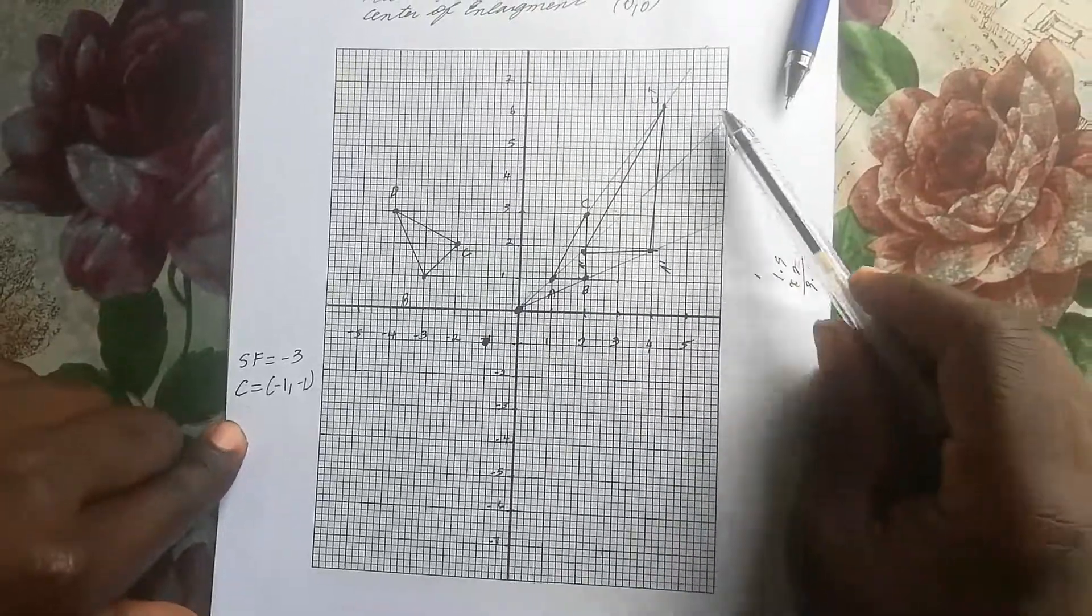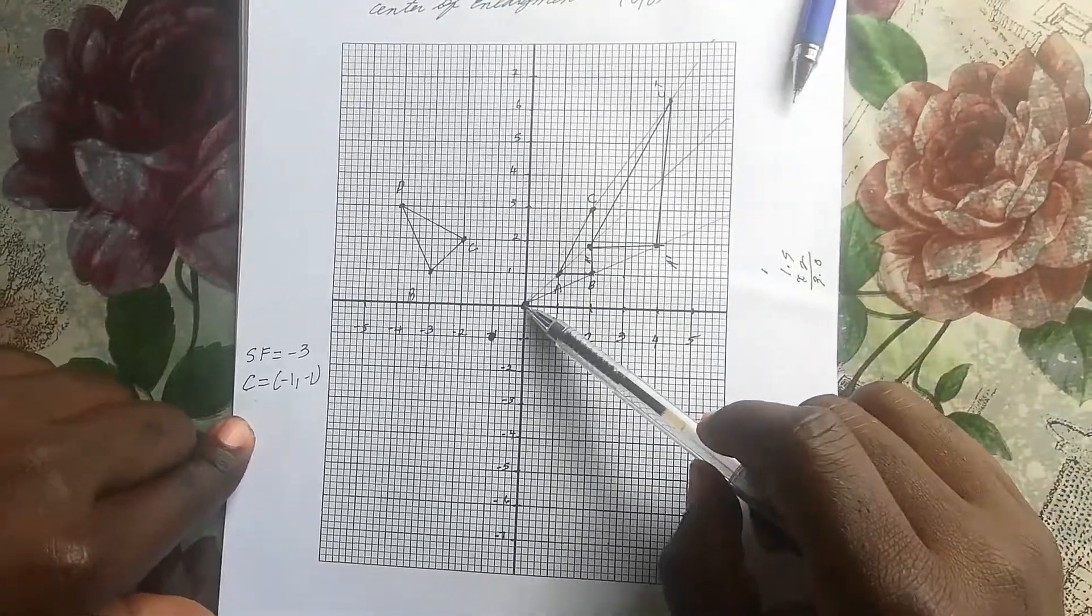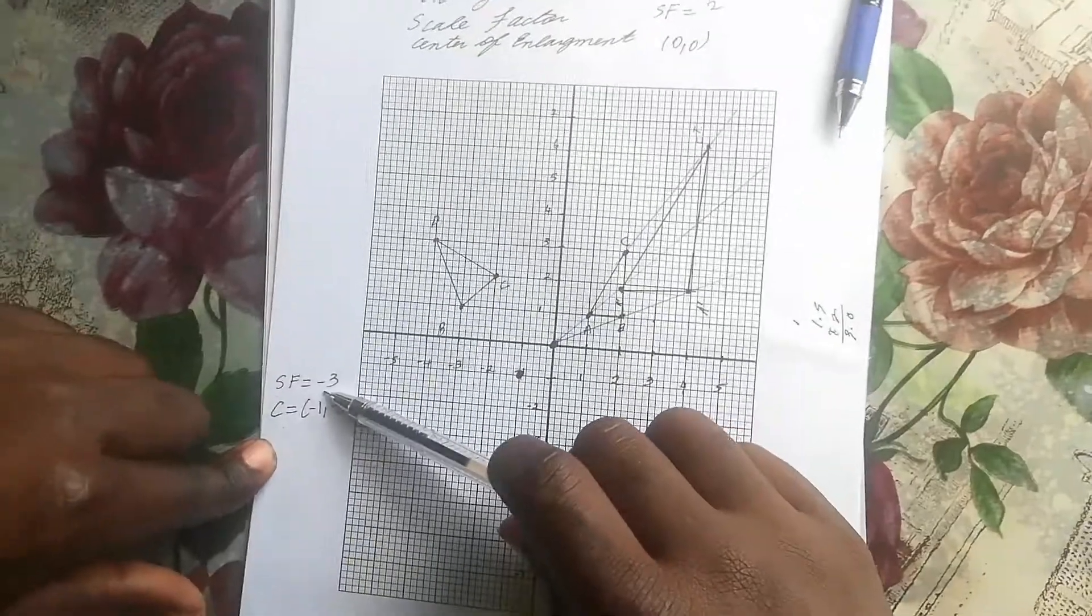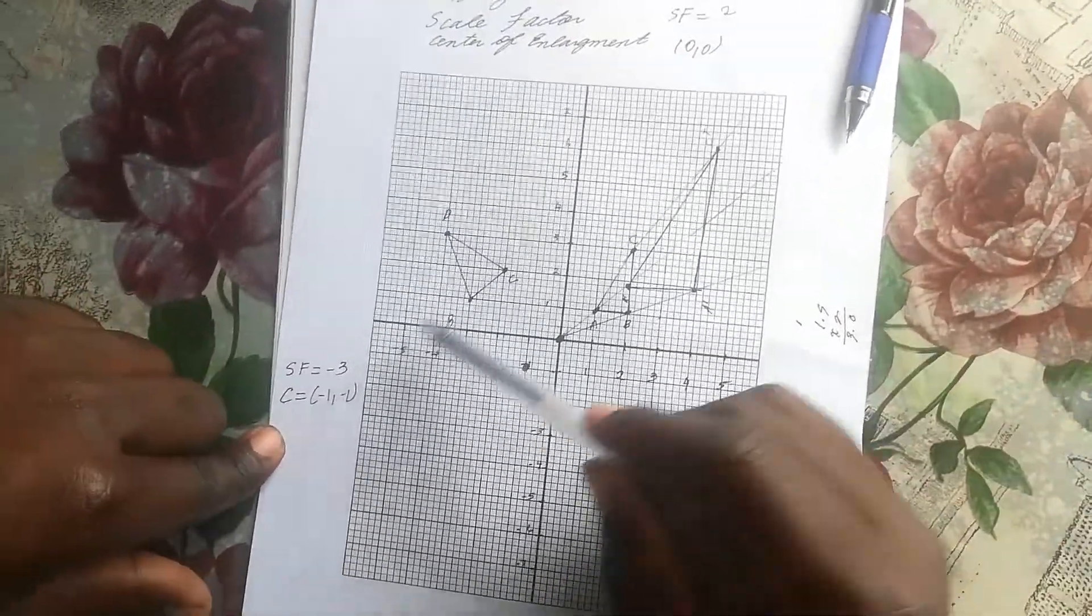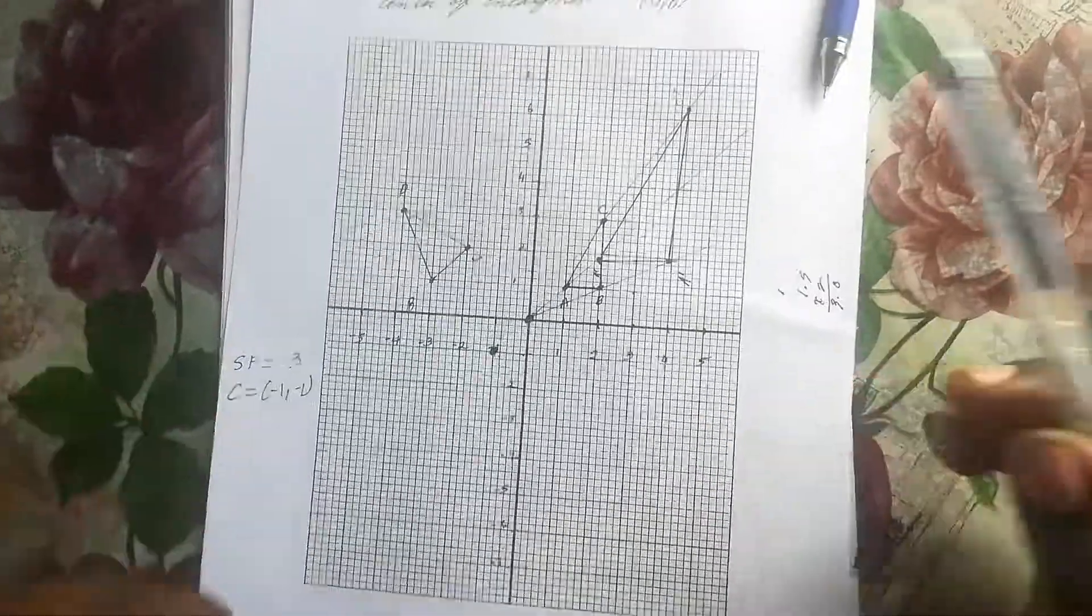Unlike when our scale factor is positive, where we draw lines from the center through the vertices, if the scale factor is negative we draw lines from the vertices through the center.